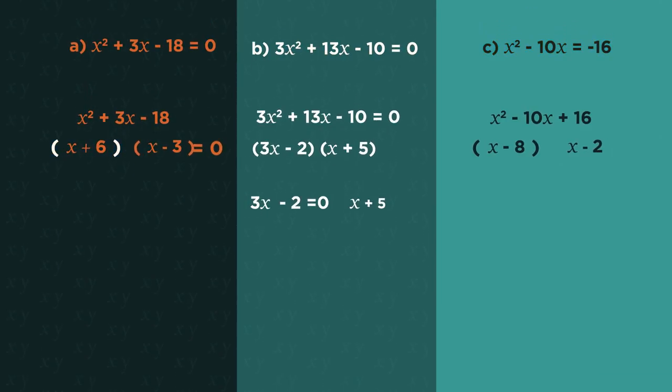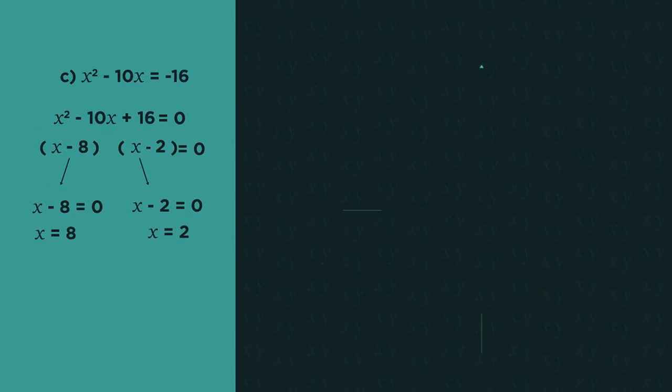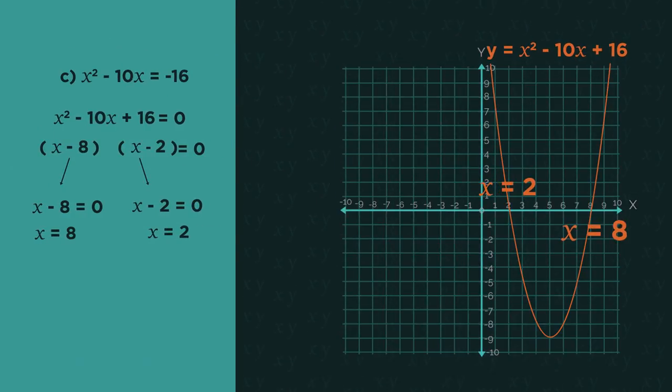Did you get them right? So then, if we looked at the third one on the graph, it would look like this. With 8 here and 2 here.